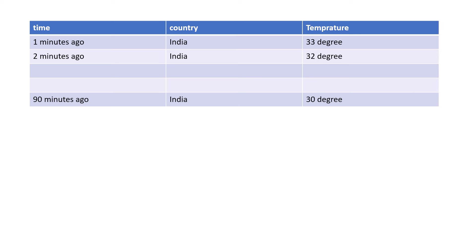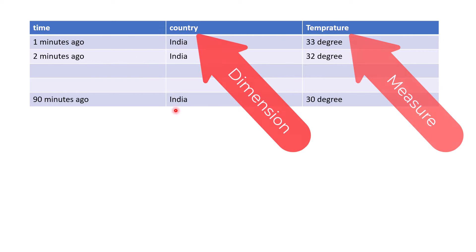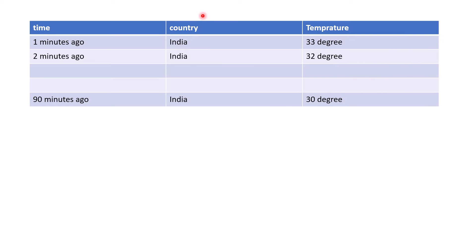Let's discuss the data which we are going to insert to Timestream — we are going to insert weather data. Typically when inserting data in Timestream Database, time is one of the mandatory fields. Then we have dimensions and measures. A dimension is something we use to categorize data — for example, country is going to be one dimension. Temperature is called a measure; the measure is the one which holds the value. So a minute ago, India's temperature was 33 degrees Celsius — that's the dimension and the measure we inserted.